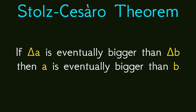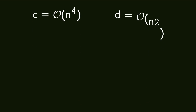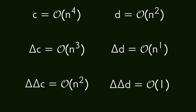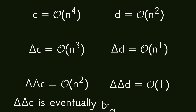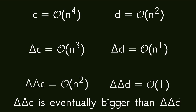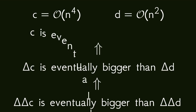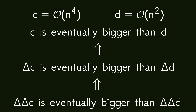What does this mean for polynomial sequences? As an example, suppose we have a polynomial sequence of order 4 and a polynomial sequence of order 2. When we take the delta of these we get polynomials of order 3 and 1 respectively. If we take another delta of each we get a polynomial of order 2 and a constant sequence. Since we are only dealing with increasing sequences, we can be certain that the polynomial of order 2 is going to eventually be bigger than the constant sequence. From the Stoltz-Cesaro theorem this means that an order 3 polynomial is eventually bigger than an order 1 polynomial, which in turn means that an order 4 polynomial is eventually bigger than an order 2 polynomial. This method can be used to show that in general, for two polynomial sequences of different order, the polynomial with the bigger order will grow faster than the other one.